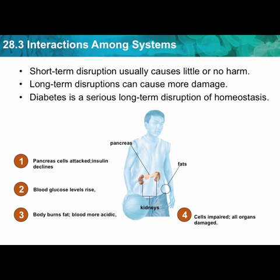As the blood becomes acidic, cells are impaired and organs are damaged. A long-term result of diabetes was sometimes that people had to have outer limbs amputated, because blood flow was worst in the extremities. Eyesight was also affected — there is a lot of blood flow in the retina, and acidic, compromised blood flow caused people to become blind. In general, diabetics on average didn't live as long as people who weren't diabetic.